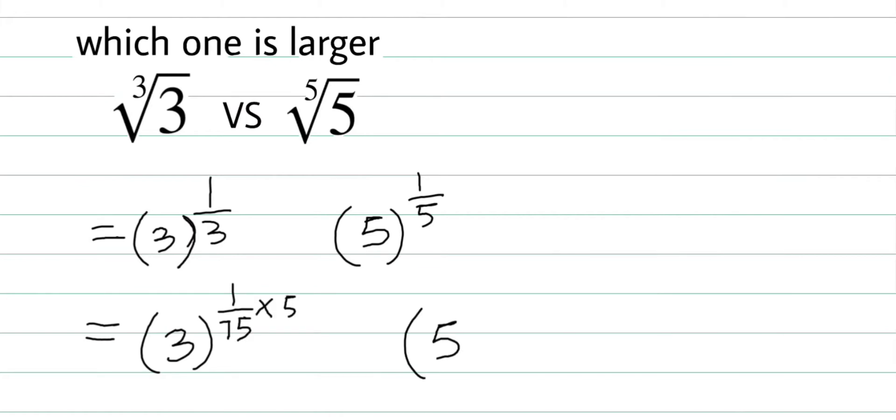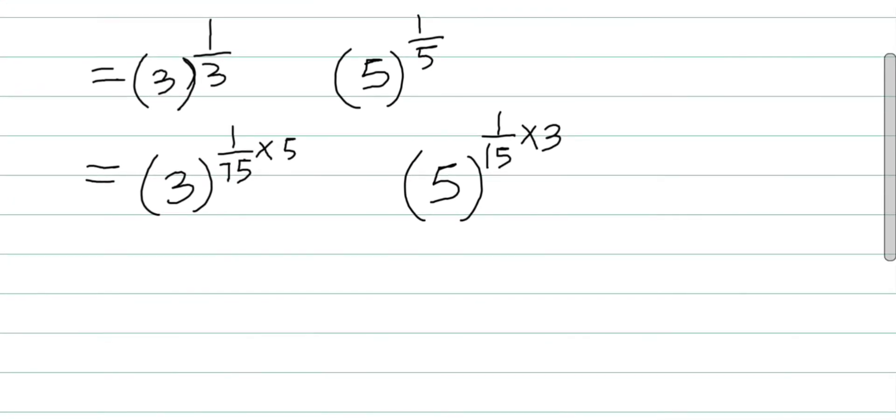Now I can put this power inside and write (3^5)^(1/15), and this one is (5^3)^(1/15). Next, we'll compute their powers. 3 to the power of 5 is 243.